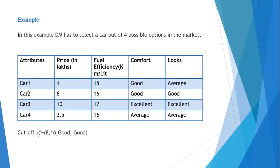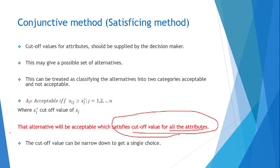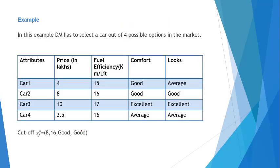We will understand everything we discussed with the help of an example. In this example, a decision maker is looking for a car out of four possible options available in the market. The attribute values given are: price, fuel efficiency, comfort, and looks. The cutoff values xij-star are: 8, 16, good, and good respectively.